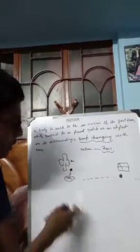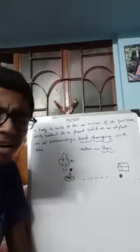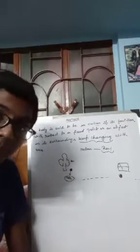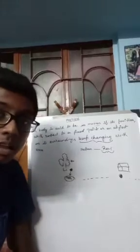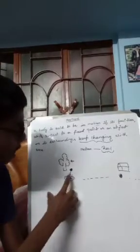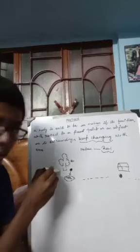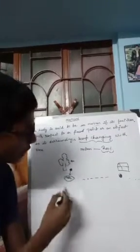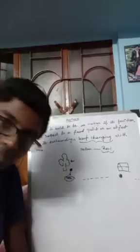When we go deeply into this chapter, we will understand topics like time and speed. But in today's video I am only going to cover motion and the types of motion. We have now understood what is rest and what is motion. We can say a car is at rest because it is not changing its surrounding with respect to a fixed object with time.